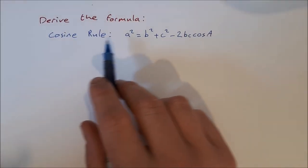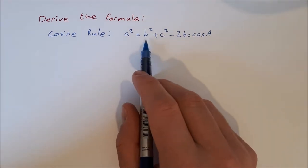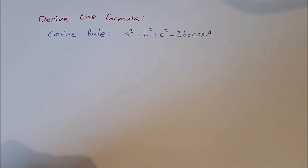Derive the formula, the cosine rule, which is a squared equal to b squared plus c squared minus 2bc cos A.